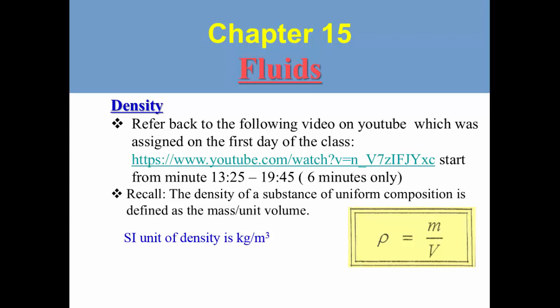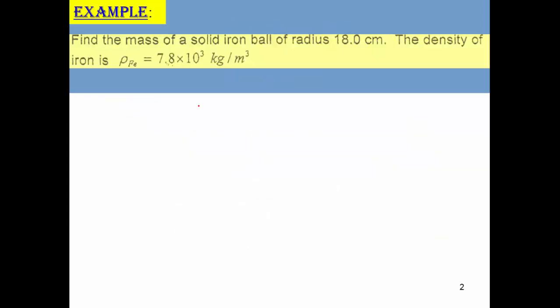Hello everyone. As we learned before, density is defined as the mass per volume. In terms of metric units, the unit of density is kilogram per cubic meter. In this problem, we are given the radius of a ball and we are told that it is made of iron. We are given the density of iron, and the unknown is the mass. We know that the volume of a ball, which is a sphere, is 4/3 π r cubed.